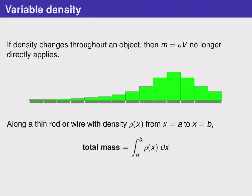And in this case, we get the exact same thing. Instead of multiplying density times delta x, we integrate rho of x, the density function, from our left endpoint to our right endpoint.